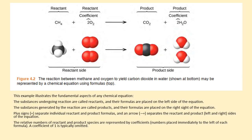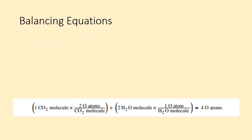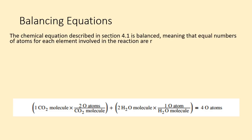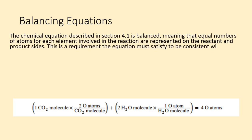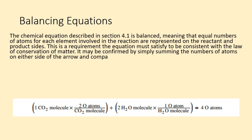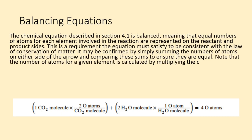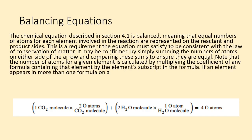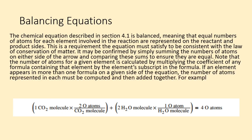The chemical equation described in section 4.1 is balanced, meaning that equal numbers of atoms for each element involved in the reaction are represented on the reactant and product sides. This is a requirement the equation must satisfy to be consistent with the law of conservation of matter. It may be confirmed by simply summing the numbers of atoms on either side of the arrow and comparing these sums to ensure they are equal. Note that the number of atoms for a given element is calculated by multiplying the coefficient of any formula containing that element by the element subscript in the formula. If an element appears in more than one formula on a given side of the equation, the number of atoms represented in each must be computed and then added together.